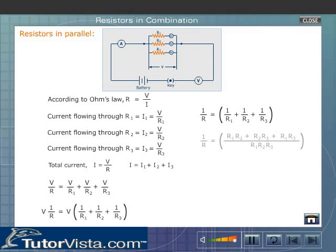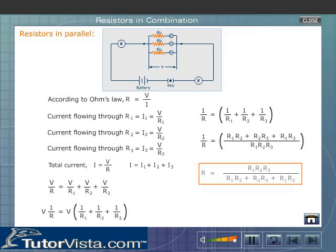This equation can be further simplified as shown here. Therefore, the effective resistance R = (R1·R2·R3) / (R1·R2 + R2·R3 + R1·R3).